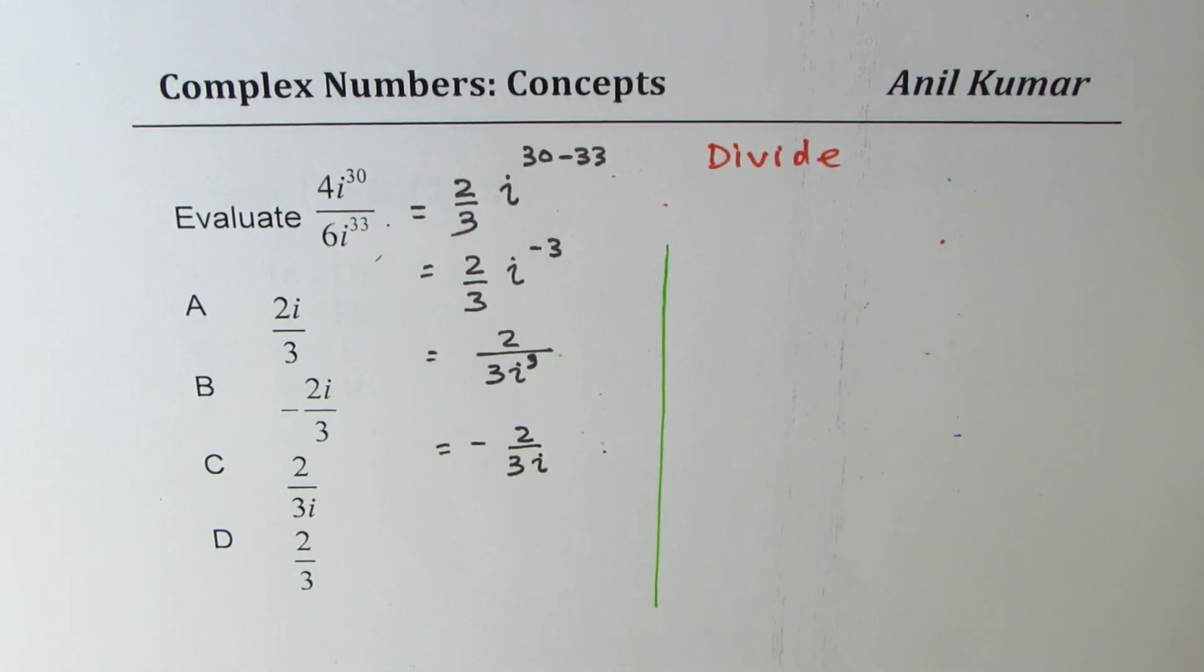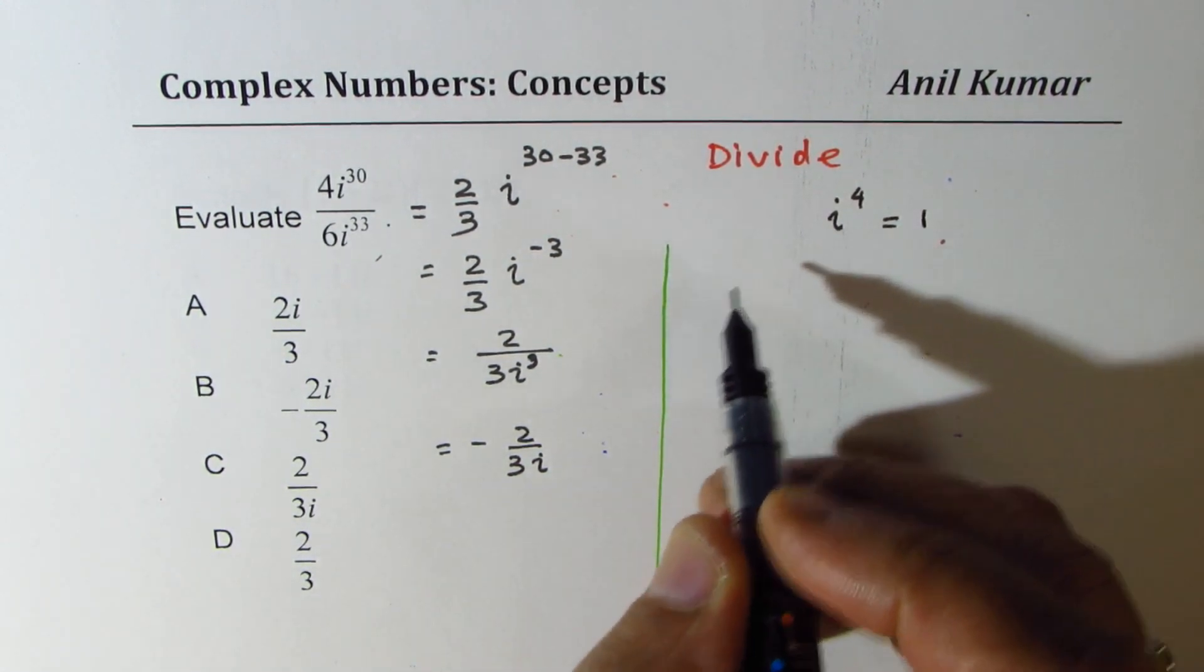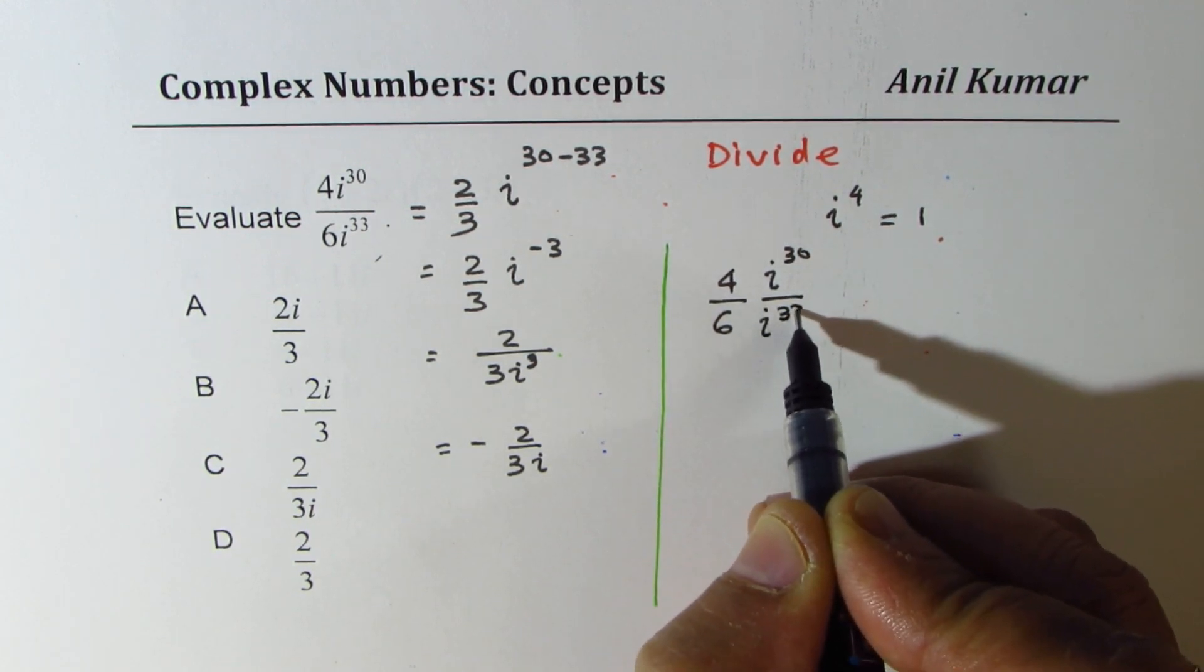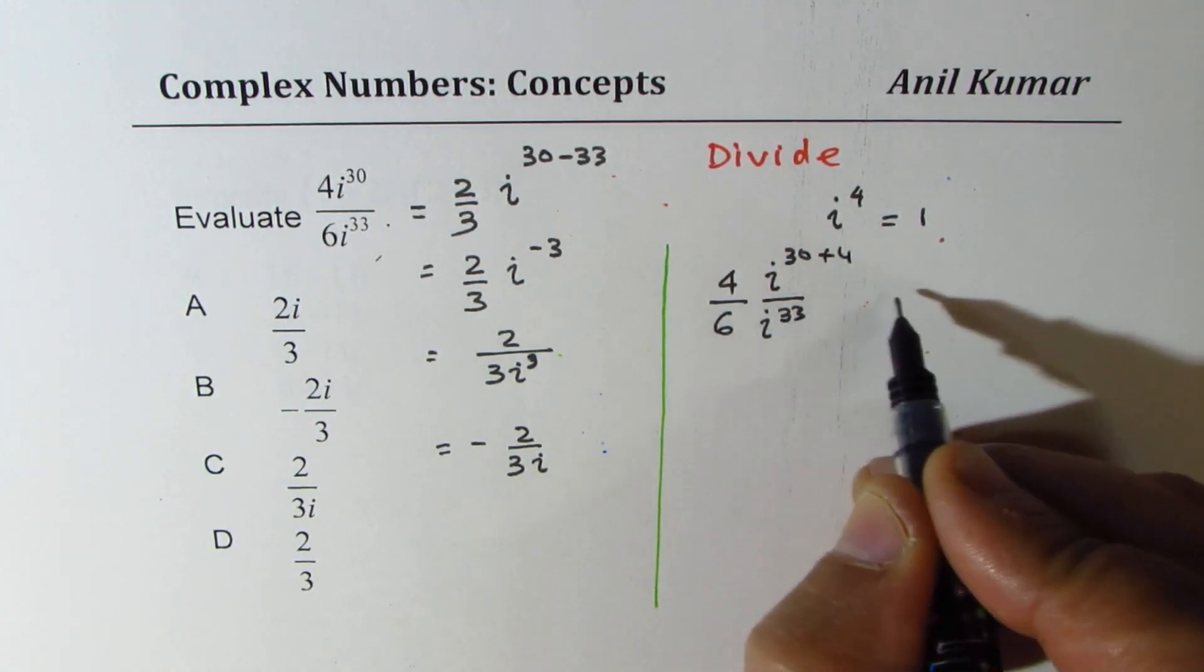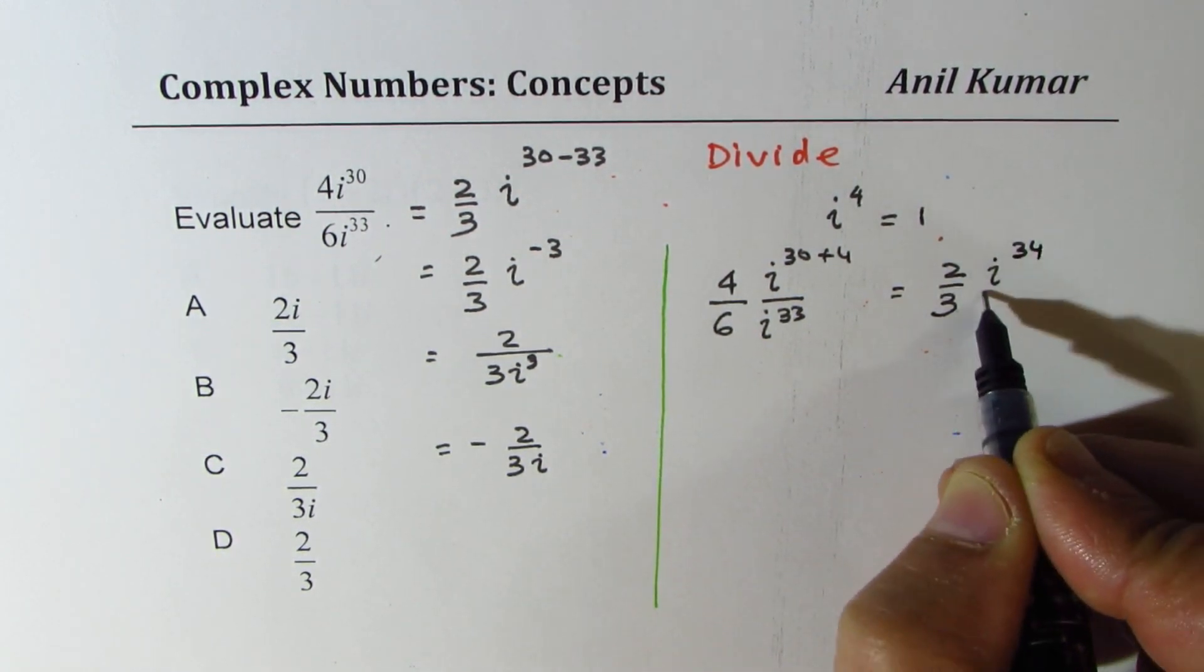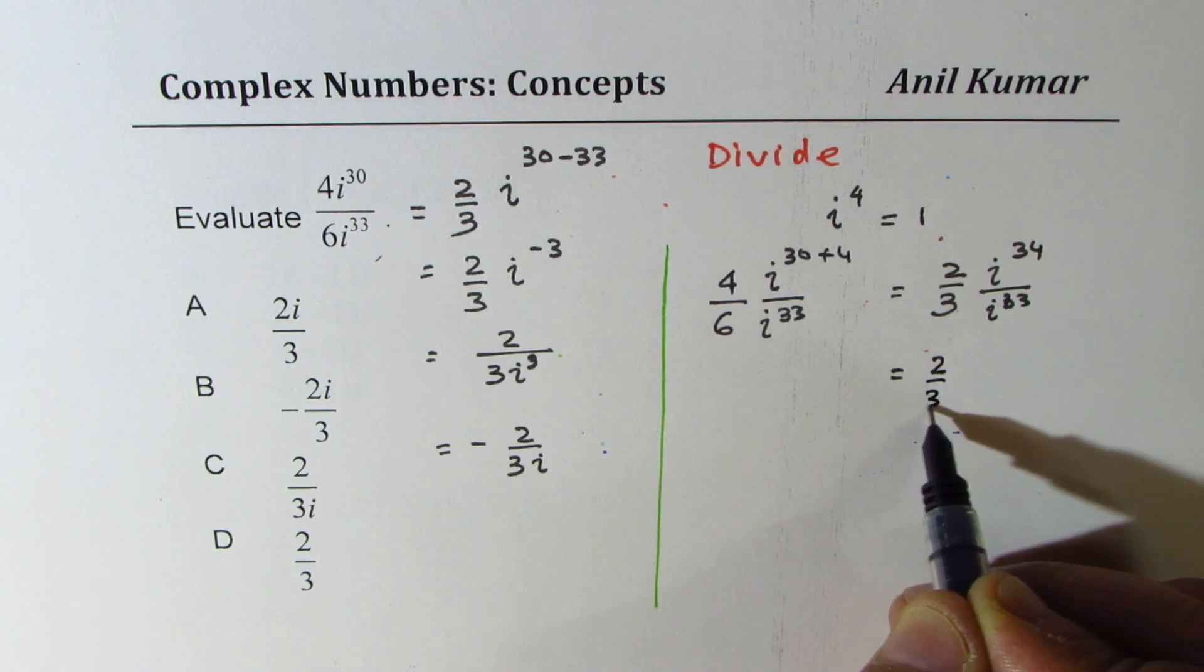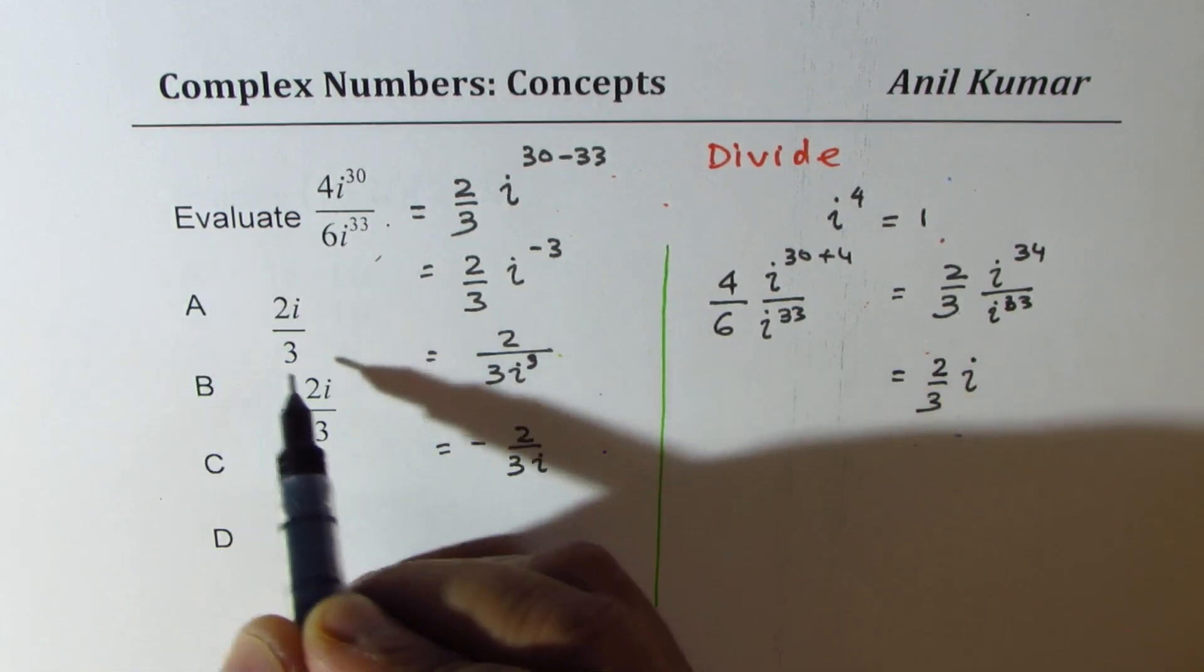Now here is a neat way of doing it. i to the power of 4, as I said, is just 1. So I could have written this as 4 over 6, i to the power of 30 over i to the power of 33. If I add 4 here, it is just multiplying by 1. So we could think about writing this as 2 over 3i to the power of 34 over i to the power of 33, and that gives you 2 over 3i.